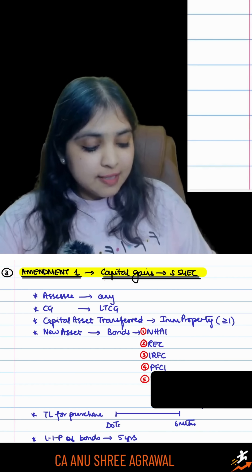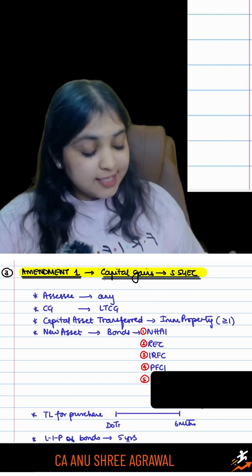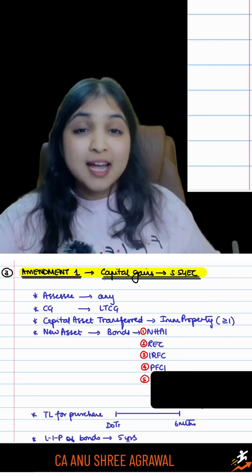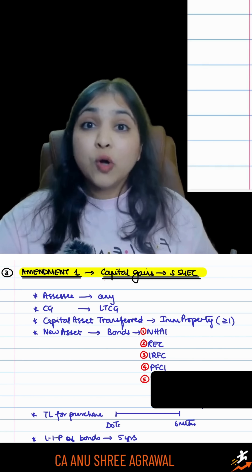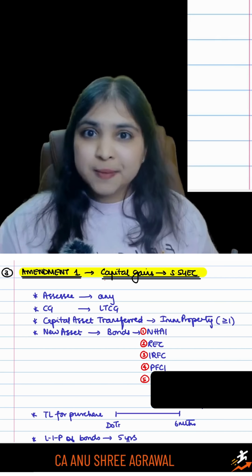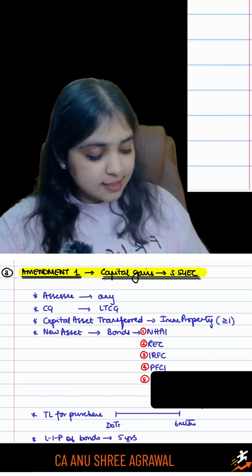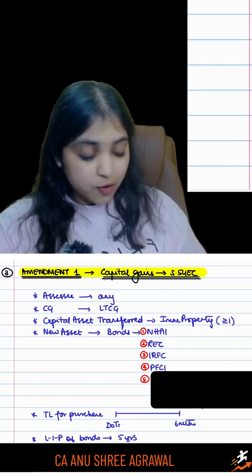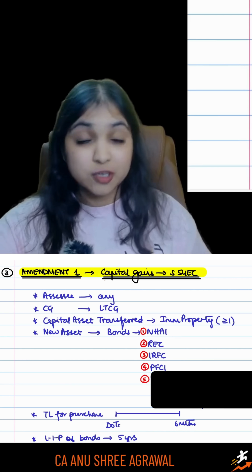The first amendment is with respect to Section 54. In Section 54, the Assessee transfers any immovable property and acquires bonds. We already have 4 specified bonds in Section 54 — NHI bonds, REC bonds, IRFC bonds, and PFCI bonds.